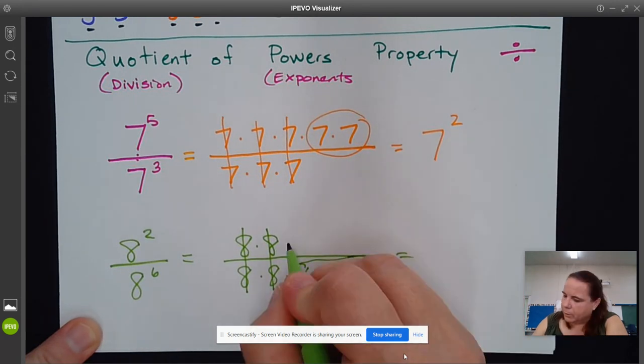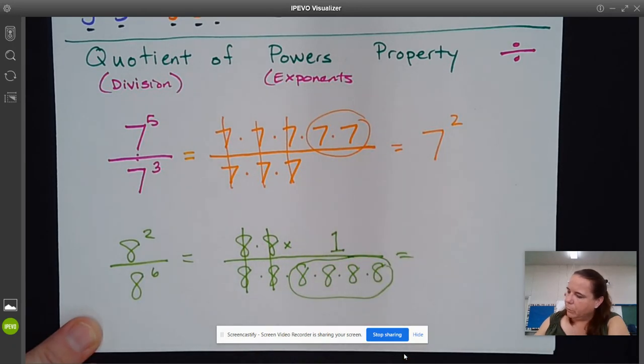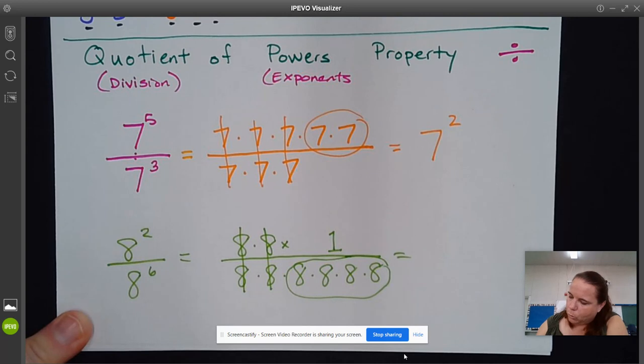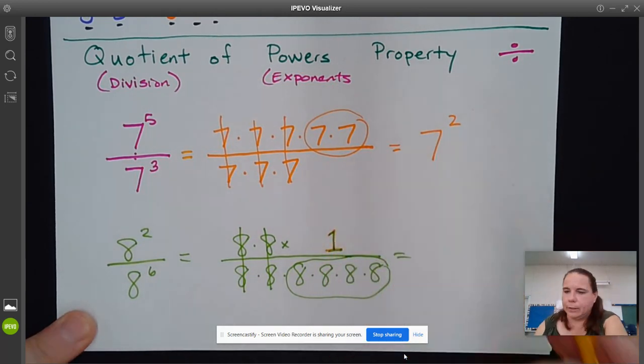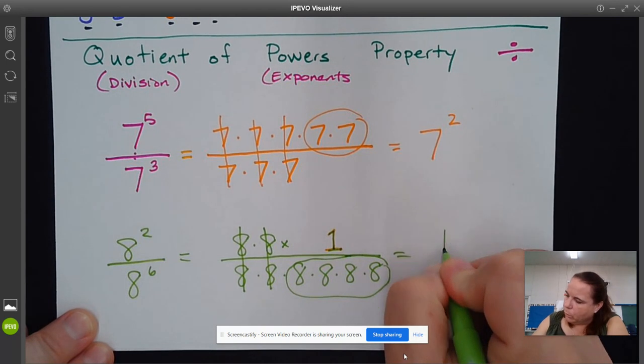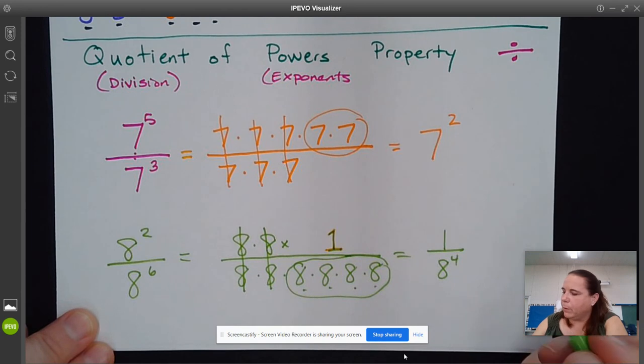But what you have to remember is, this is always times 1. You don't want to forget about this 1 that's sitting there even though you can't see it. So what you're going to end up with is 1 over 8^4.